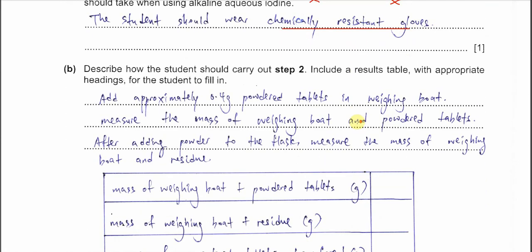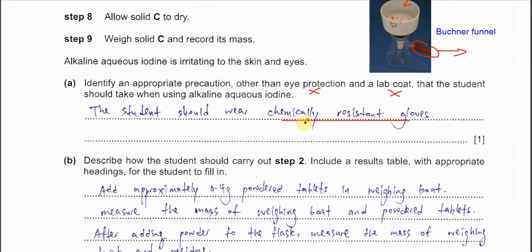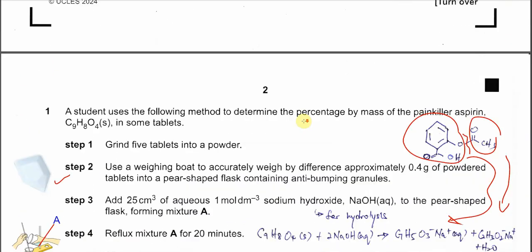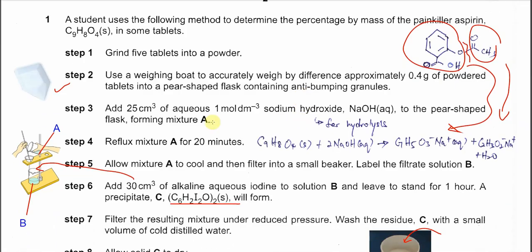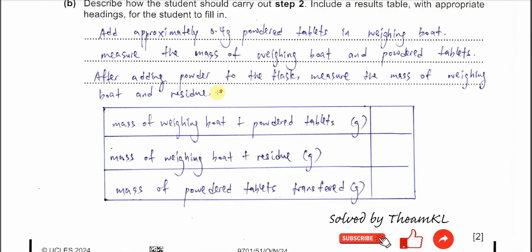Part B, describe how the student should carry out step 2. Include a results table with appropriate headings for the students to fill in. This one is step 2. We need to use a weighing boat and powder, and of course we need to pour the powder into the pear-shaped flask. So we need to get 2 mass readings.